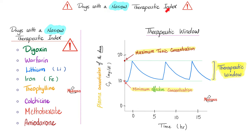Medications with a narrow therapeutic window include: digoxin, warfarin, lithium, iron, theophylline, colchicine, methotrexate, and amiodarone. Narrow therapeutic index means the distance between the minimum effective concentration and the maximum toxic concentration is very small — making it very easy to overdose, so toxicity is more likely. Be very careful with these medications.